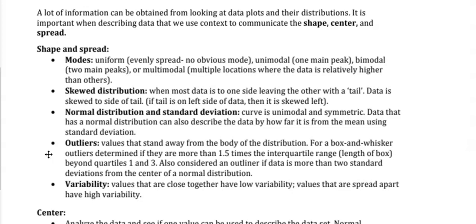Outliers are those extreme data values that are away from most of the data, the body of the distribution. What we do to check to see if there's an outlier is we use 1.5 times the interquartile range to see if the data value is more than 1.5 times interquartile range beyond quartiles 1 and 3.